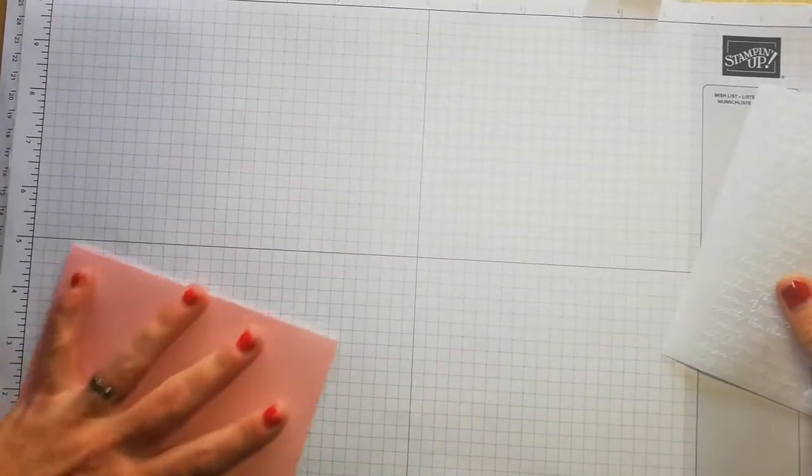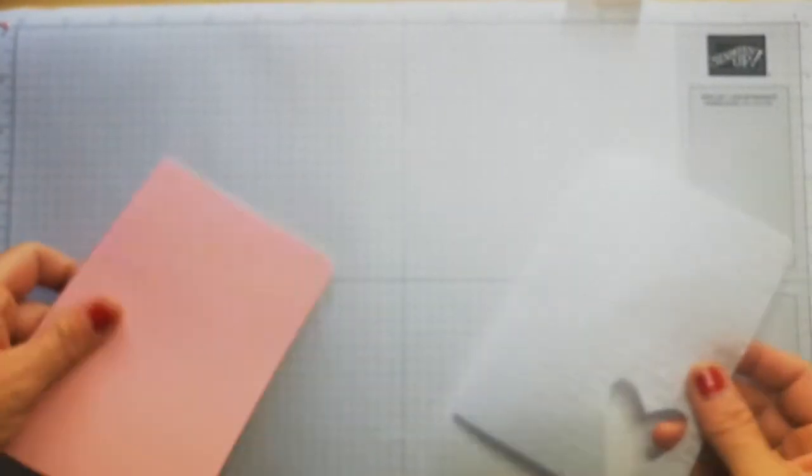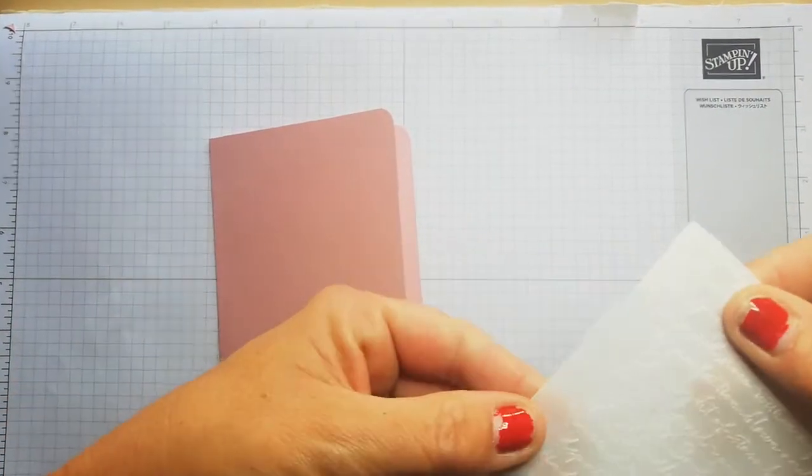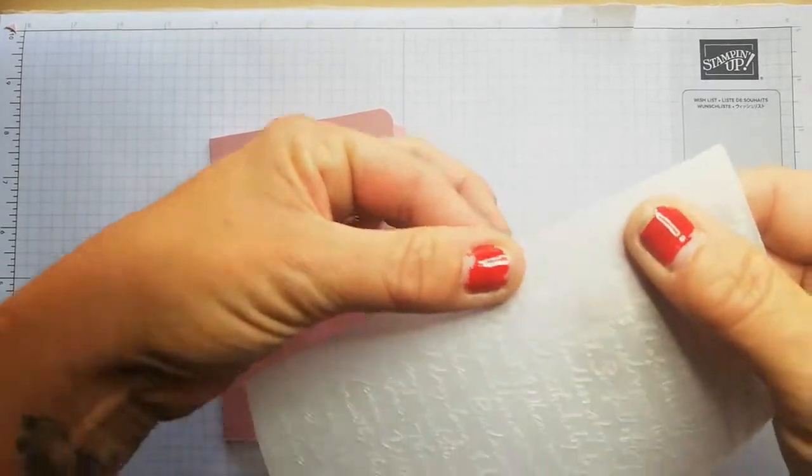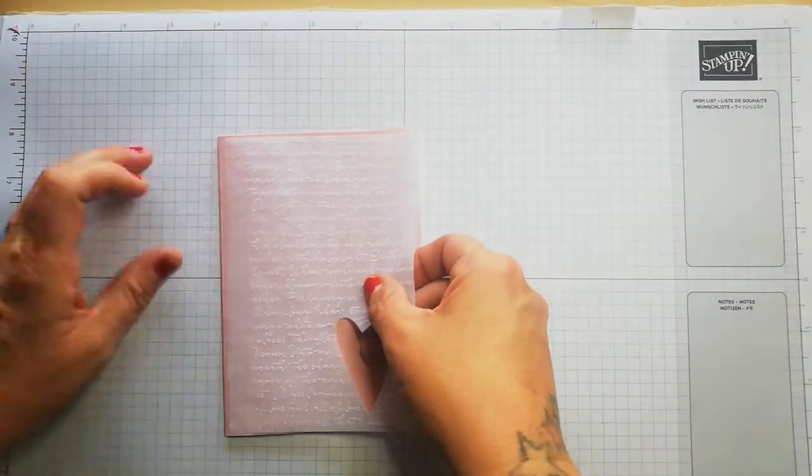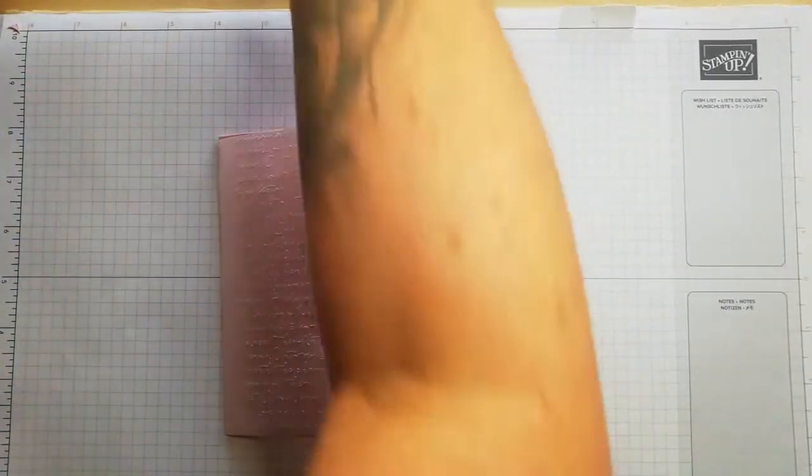You can see here how gorgeous that is, and this is just the plain vellum, absolutely stunning. It's quite good that I didn't run it through properly, so this edge isn't as embossed as the rest, but that's fine because that is going to be adhered down here.